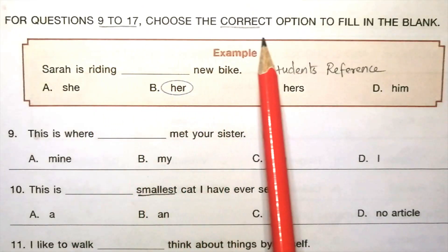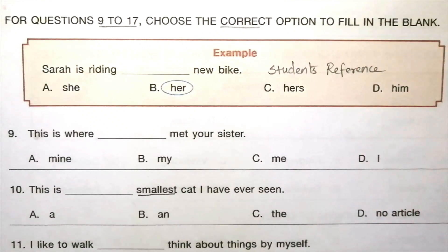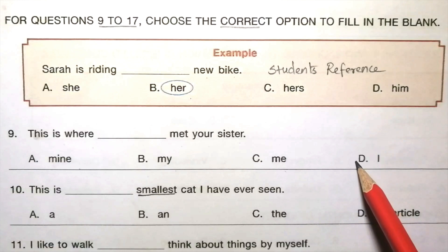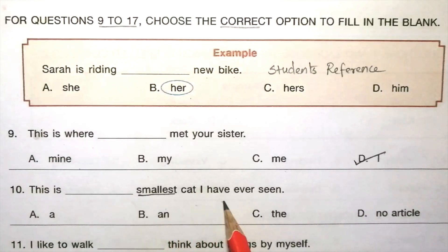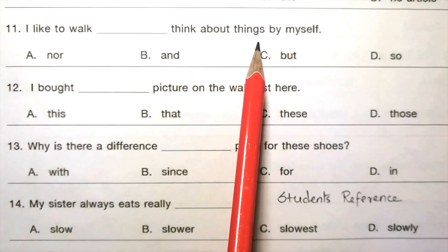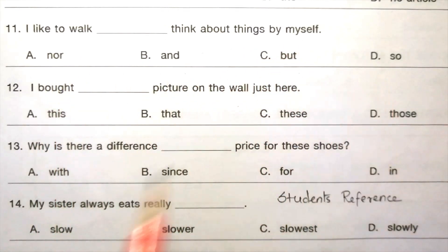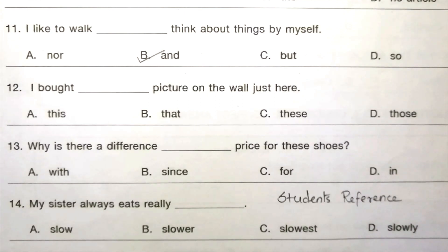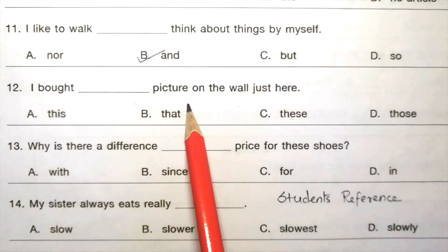For questions 9 to 17, choose the correct option to fill in the blank. Question 9: 'This is where dash met your sister' — mine, me, I. The answer is D, I. Question 10: 'This is dash smallest cat I have ever seen' — a, and, the, no article. The answer is C, the. Question 11: 'I like to walk dash think about things by myself' — nor, and, but, so. The answer is B, and. Question 12: 'I bought dash picture on the wall just here.'